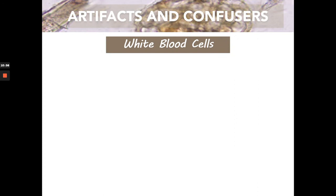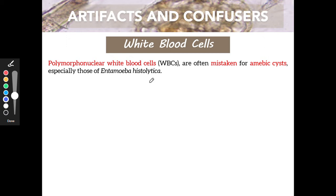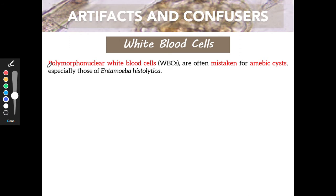Now we go to the different artifacts we can see in samples. Most focus on stool samples, with the later part covering blood sample artifacts. For stool samples, we start first with your WBCs — your white blood cells — also known as polymorphonuclear white blood cells, abbreviated as PMNs.